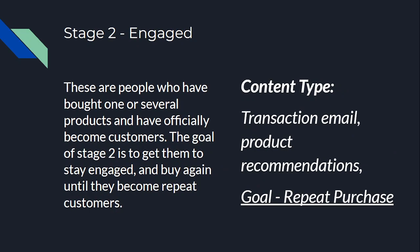Stage two is engaged. These are people who have bought from you — they've bought one or two products and have officially become customers. The goal of stage two is to keep them engaged and hopefully get them married, buying again and again until they become repeat customers. The kind of content you push out here includes transactional emails, product recommendations, birthday emails, service alerts, upcoming events, special promotions, and contests. The goal is to drive repeat purchases.